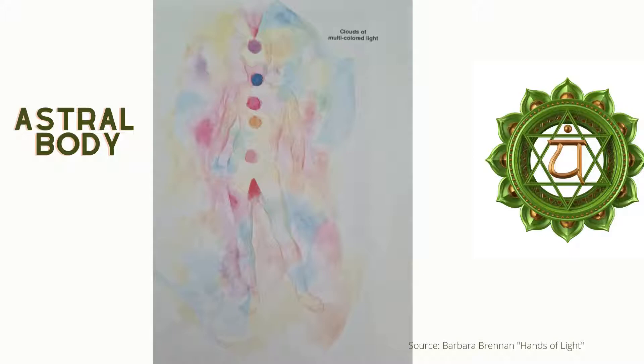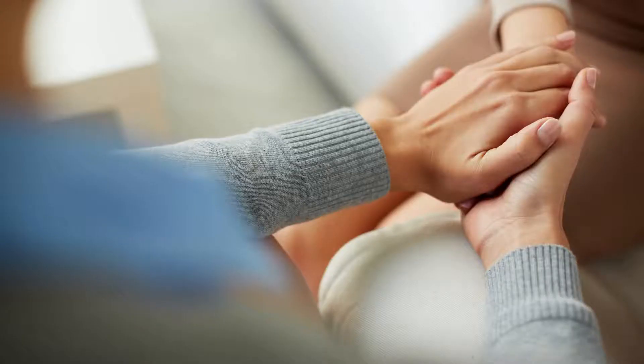The heart chakra of a loving person is full of rose light at the astral level, extending about one half to one foot from the body. When people fall in love, beautiful arcs of rose light can be seen between their hearts. When people form relationships, they grow chords out of the chakras that connect them. The longer and deeper the relationship, the stronger the chords, which exist on many levels of the auric field.